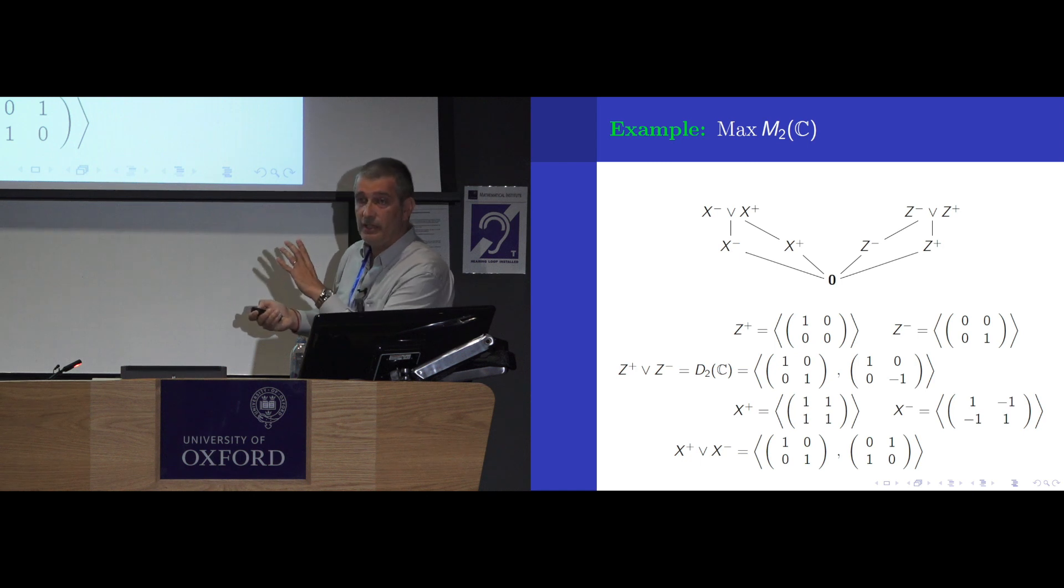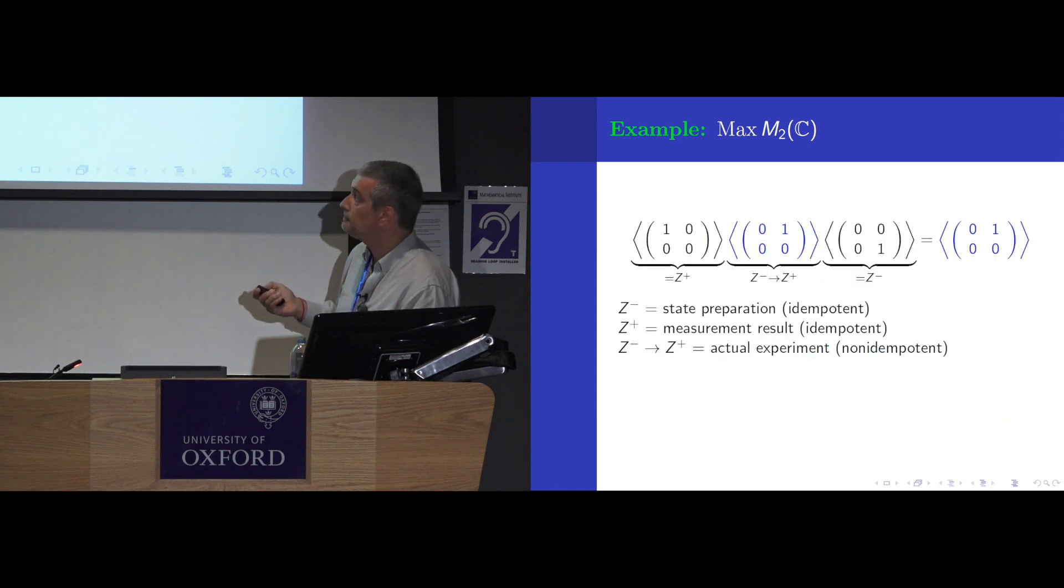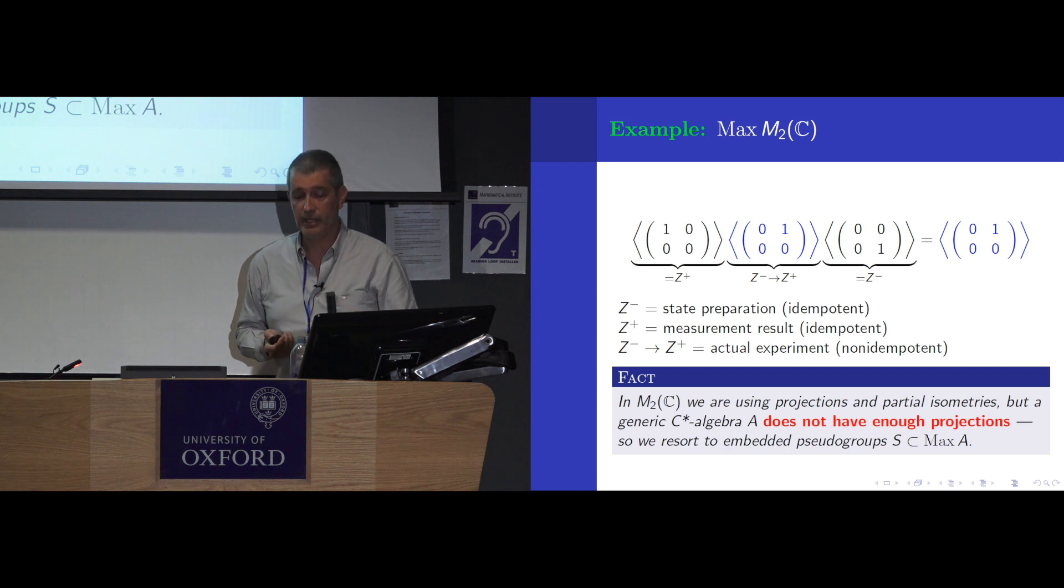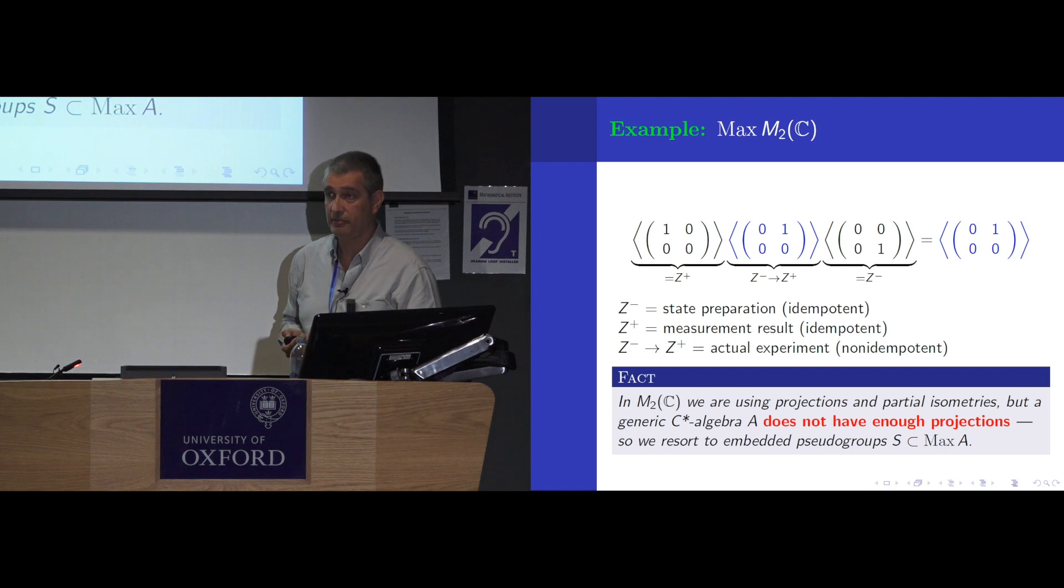But also you can take this quantale to be something else. You can take it as a language of quantum measurements, where you can think of Z minus here as a state preparation, Z plus as measurement result, and this partial isometry is something that carries Z minus to Z plus. It doesn't matter how you did it, but it's just a kinematical description of a measurement. You can't do this because, well, you have lots of projections in this algebra because it's a phenomenon algebra. In general, for a C-star algebra, you don't have projections, enough projections, or partial isometries, and you have to resort to something else. What you do is you take abelian subalgebras, take their ideal lattices, which are locales, that's in max A. So locales, remember, are these propositional logics. Also, you have canonical representations of transformations, which are like partial isometries, going from open sets of the spectrum of the algebra to other open sets. So you get a kind of logic with a rich system of symmetries.